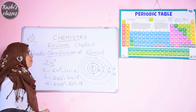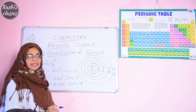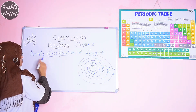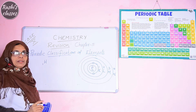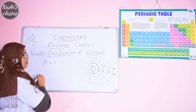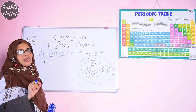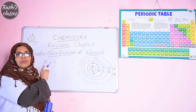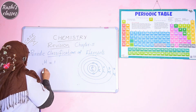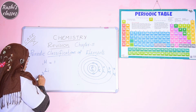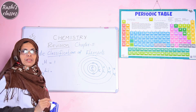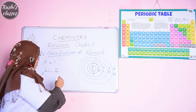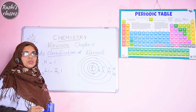Now let us learn how to write electronic configurations. Hydrogen has atomic number 1, so its electronic configuration is just 1 — only the K shell with 1 electron (K shell can accommodate 2, but hydrogen has only 1). Next is lithium, atomic number 3: the K shell holds 2 electrons, and 1 electron goes to the L shell, giving the configuration 2, 1.